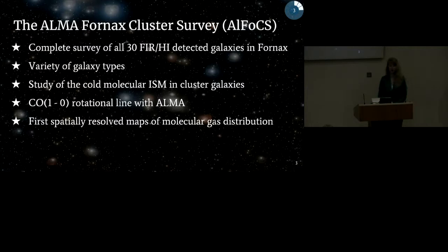So the Fornax Cluster Survey was a complete survey of the 30 galaxies in the Fornax Cluster, where we either detect dust or H1, which basically indicates that some molecular gas should be present. And it includes a variety of galaxy types. We've got spirals, ellipticals, and also a number of dwarfs. So as I said, the main goal was to study the cold molecular gas in these cluster galaxies. And to do that, we looked at the CO 1-0 line. And they basically gave us the first spatially resolved maps of these galaxies to, in detail, study their molecular gas.